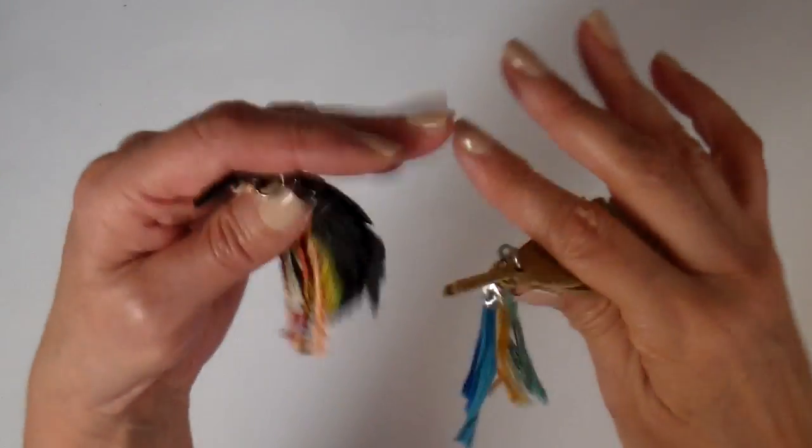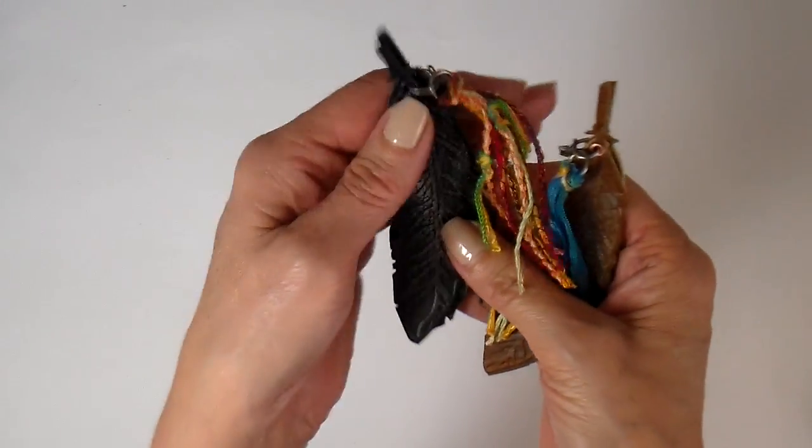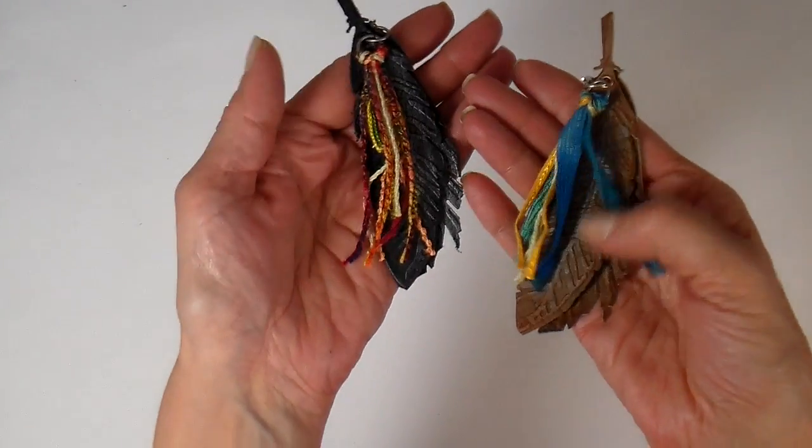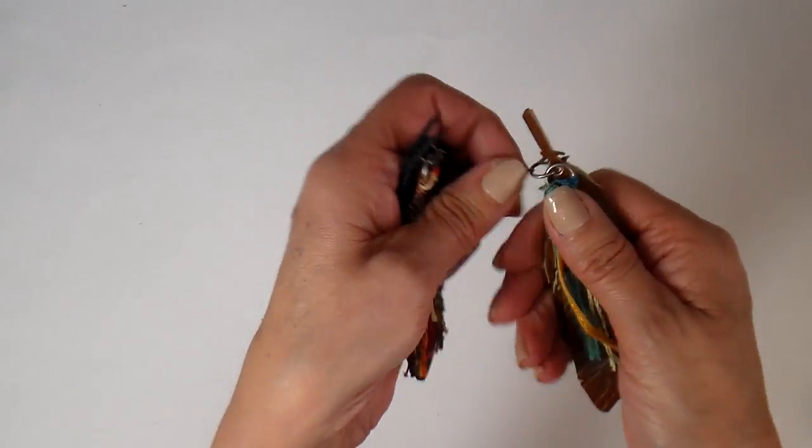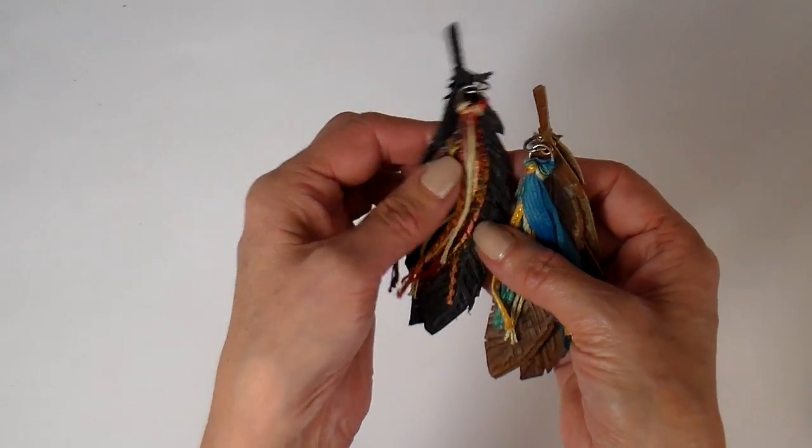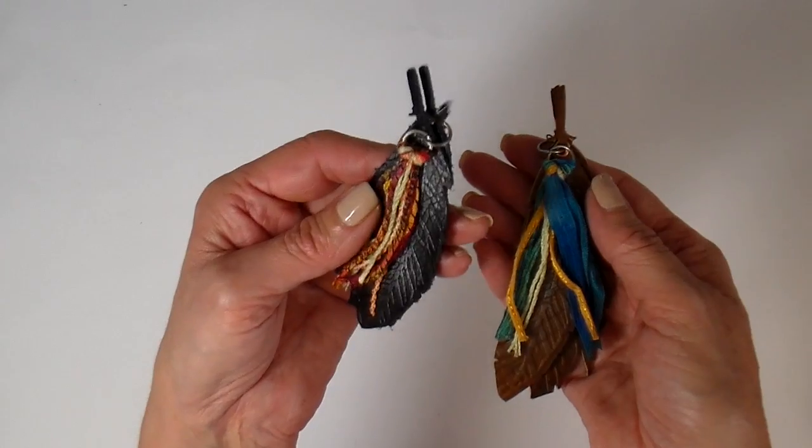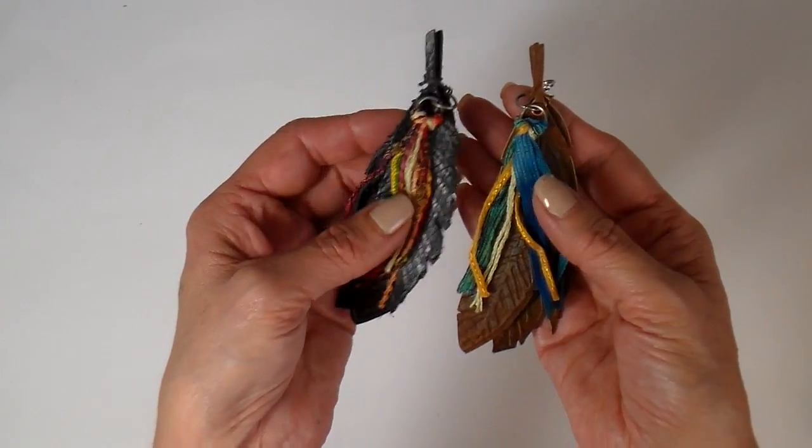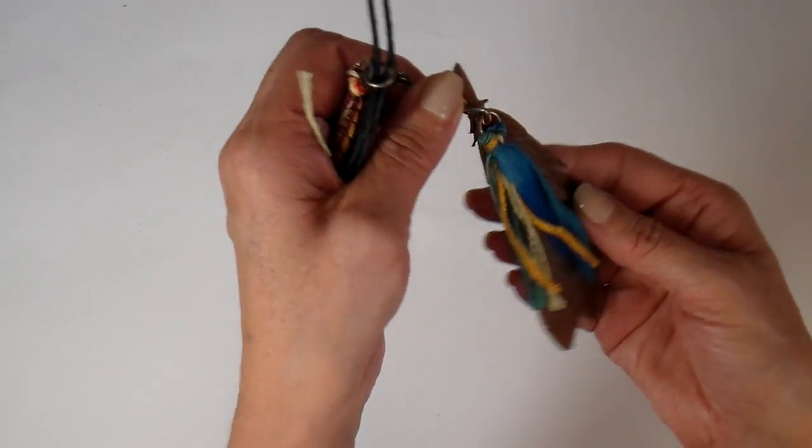I am making these kind of like little boho tassels. They have like a little lobster claw clasp on one end, and I thought they'd be really cute hanging off the edge of a journal or a planner, possibly even like a zipper pull on a tote or a bag.